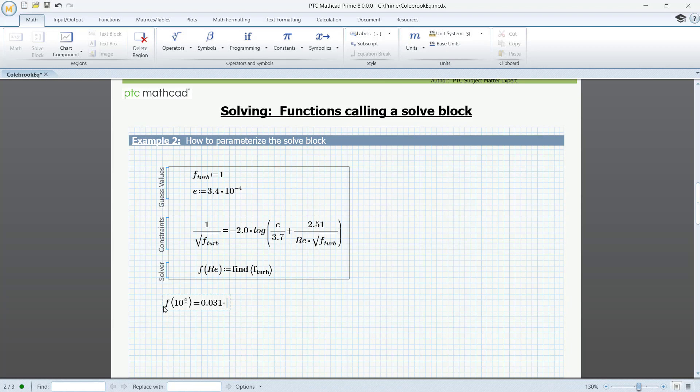We can use this function to compute F for any Reynolds number, given the fixed value of the relative roughness we have here. So let's try F of 10 to the power of 5.